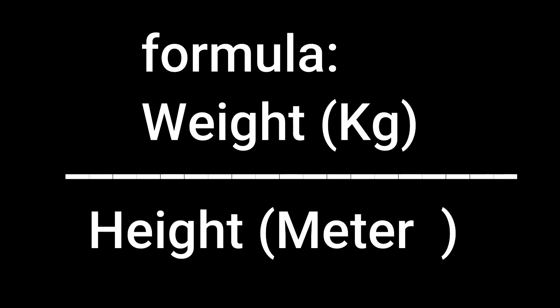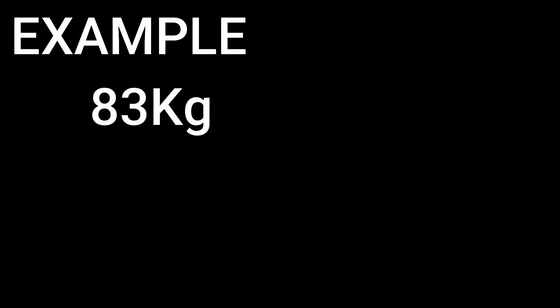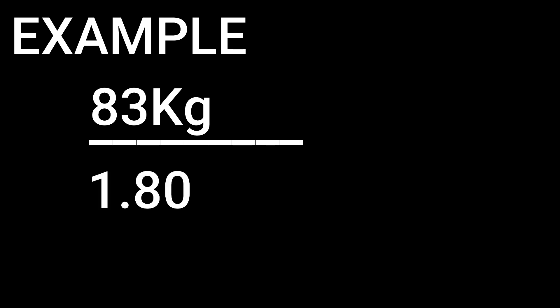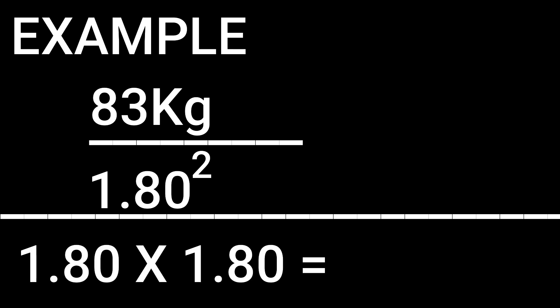Now let's talk about BMI, or Body Mass Index. The formula is: weight in kilograms divided by height in meters squared. For example, 83 kilograms divided by 1.80 meters squared — first compute 1.80 times 1.80, which equals 3.24.